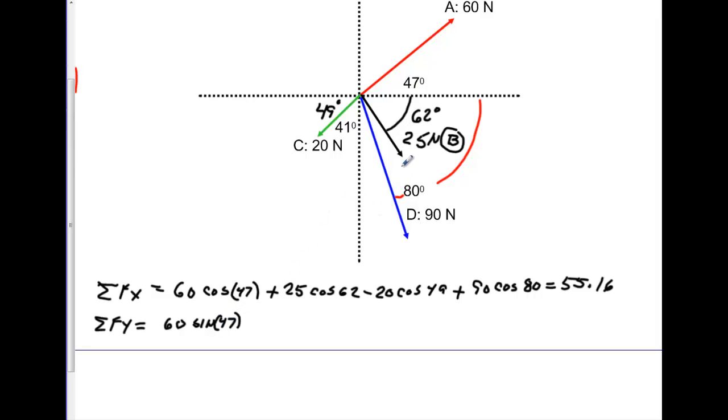We jump to our B vector. B is going to have a negative y value. So minus 25 times the sine of 62 degrees. We jump to C. It's also going to have a negative of 20 times the sine of 49 degrees. And then D this time is going to have a negative of 90 times the sine of 80 degrees.